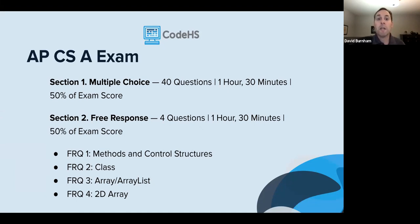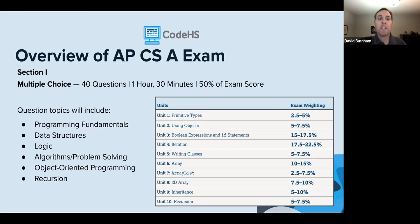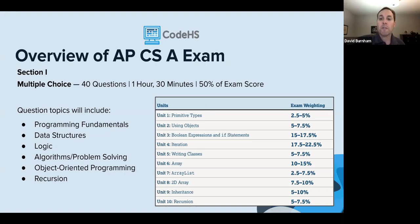The exam is two parts, each worth 50% of your score and each an hour and a half long. The first part is multiple choice — 40 questions. Looking at the topic percentages, they don't necessarily add up to 100% because there's a lot of overlap. Units three and four have large percentages because it's hard to work with arrays and array lists without Boolean expressions and iteration, so those concepts weave themselves through most of the class.